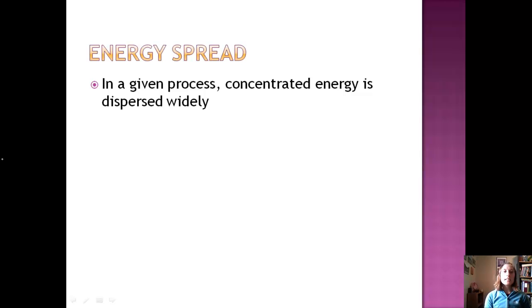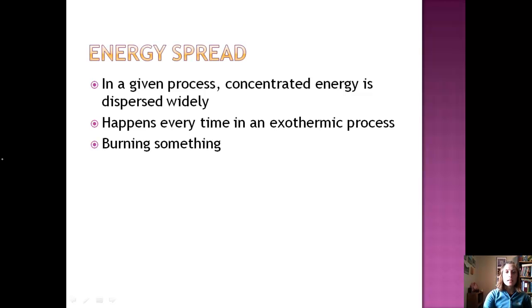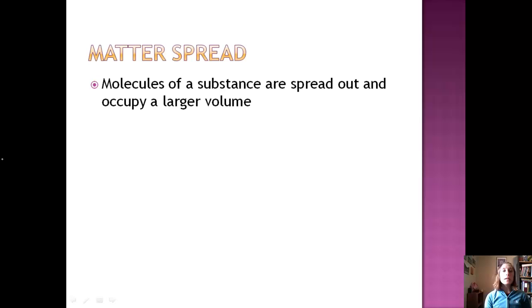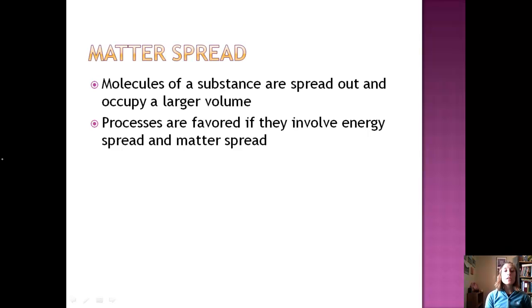Let's look at energy spread. In a given process, concentrated energy in the log gets dispersed really widely into all these other things and it's spreading out as heat. And this happens every time in an exothermic process. When you burn something, this is what's happening. And let's look at matter spread. Molecules of substance spread out when they react to occupy a larger volume. Processes are favored if they involve the spreading out of energy and the spreading out of matter. Sometimes the processes will occur in reverse, but it's going to be based on is energy spread occurring? Is matter spread occurring? Those are going to determine which way a reaction goes.